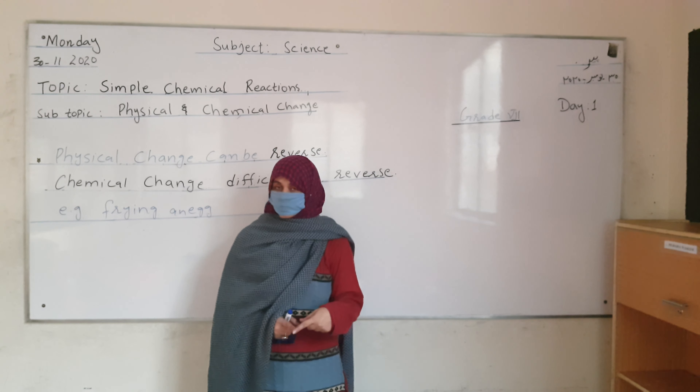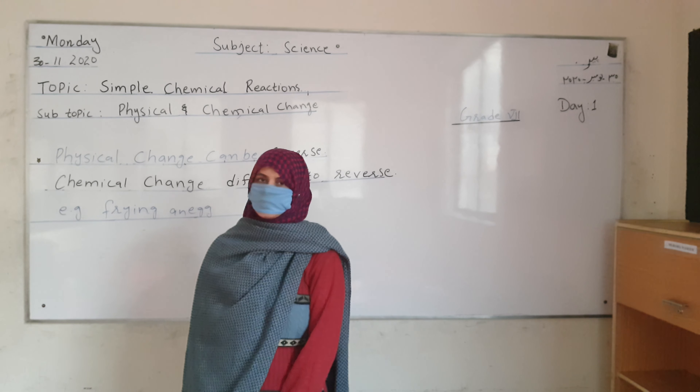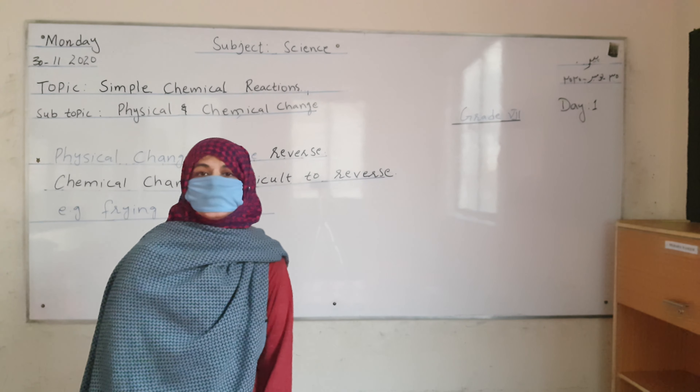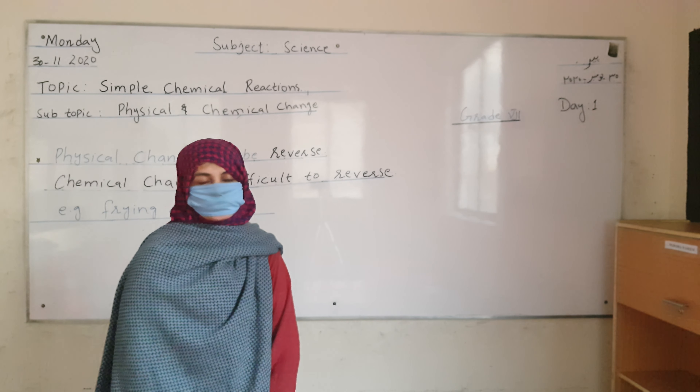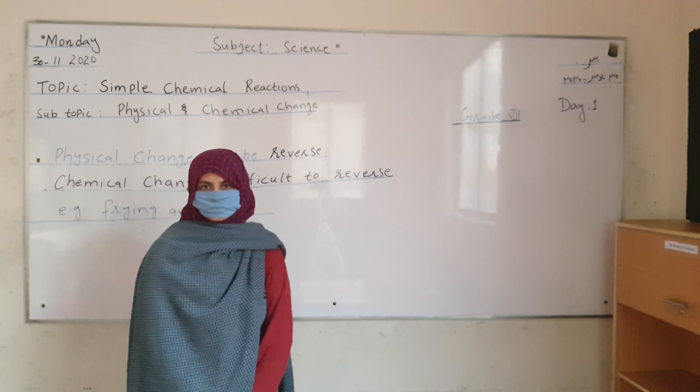So you can identify the changes — either physical or chemical — by checking whether you can convert it back or not. If you can convert it back, it is a physical change. If you are not able to convert it back, then it is a chemical change.